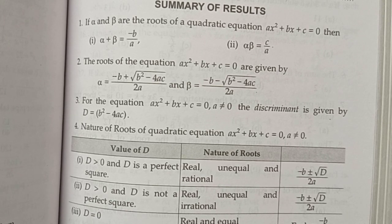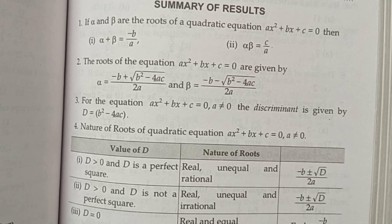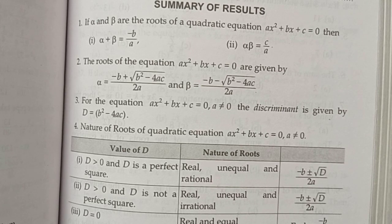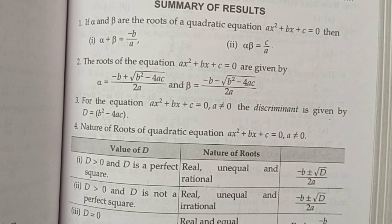The general form of a quadratic equation is ax squared plus bx plus c is equal to 0, where a is not equal to 0.